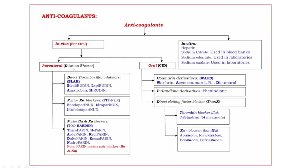So far we have discussed parenteral in vivo anticoagulants. Next, coming to oral in vivo anticoagulants. These are divided into three subgroups — C, I, D. C means coumarine derivatives, I means indandione derivatives, D means direct clotting factor blockers.